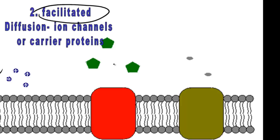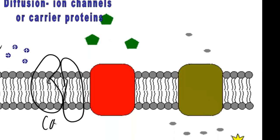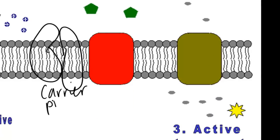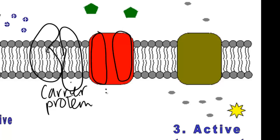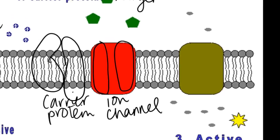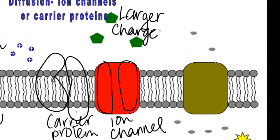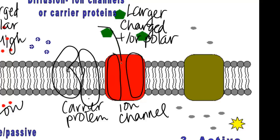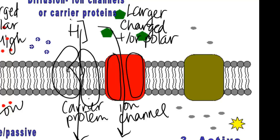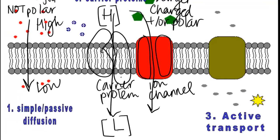With facilitated diffusion, it also does not take energy. There are two types of proteins that help facilitate things moving in and out: the carrier protein, which changes shape, and the channel protein, or ion channel protein. Both types of proteins help move molecules that are larger, charged, or polar — like water — into and out of the cell. It doesn't take energy because the molecules are moving from a high concentration to a low concentration.